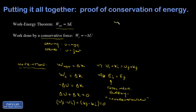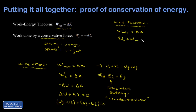Now let's look at a quick modification for the case where you do have friction. How do you use conservation of energy if a non-conservative force is acting? Starting from the beginning: net work equals change in kinetic energy. Now the net work includes work done by conservative forces plus work done by non-conservative forces — which would be friction. The work done by conservative forces is the negative of the change in potential energy, and the work done by the non-conservative force, if it's friction, would be negative. You can also have a non-conservative force pumping energy into the system.